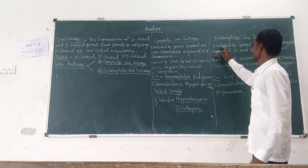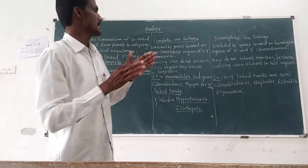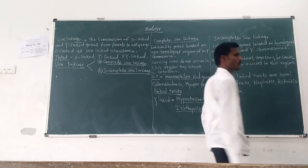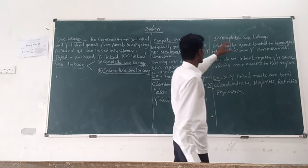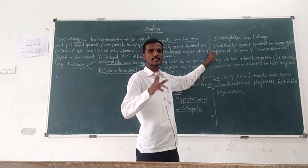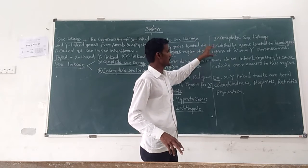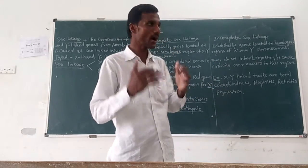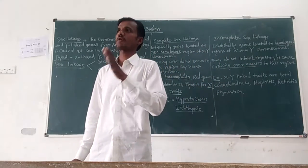The second type is incomplete sex linkage. Incomplete sex linkage is exhibited by genes located on the homologous regions of the X and Y chromosomes. Such sex linkage is called incomplete sex linkage.